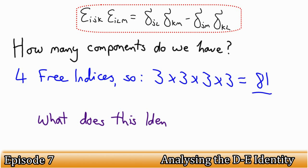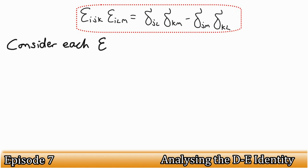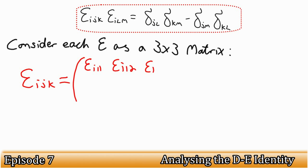But what does this identity mean, if anything? Let's take another look at the left hand side. Let's consider epsilon i j k and epsilon i l m as two 3 by 3 matrices, defined by the free indices of each epsilon, keeping i equal to 1, 2, and 3, as unknown for the moment. So we have a first matrix of epsilon i j k equal to epsilon i 1 1, epsilon i 1 2, and so on.